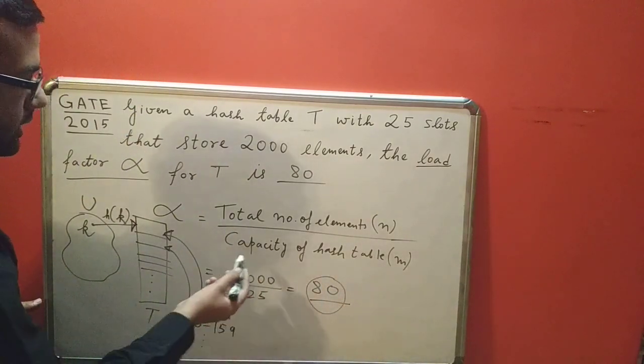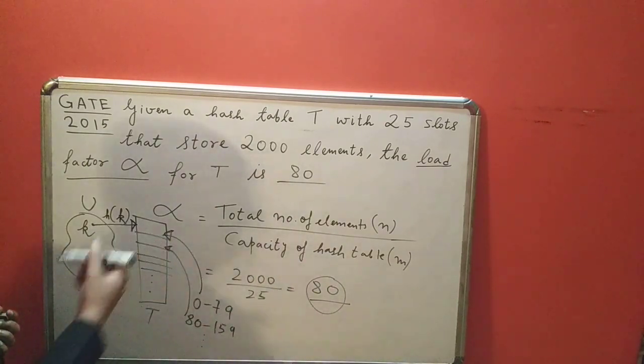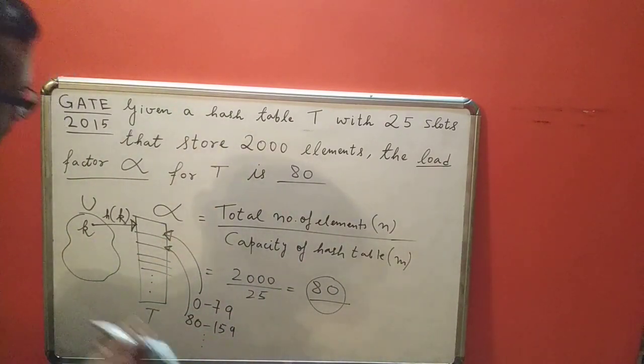Why am I taking 80 elements at a time? Because my load factor has come to be 80. This is how you would interpret the load factor for a hash table. I hope this helps, thank you.